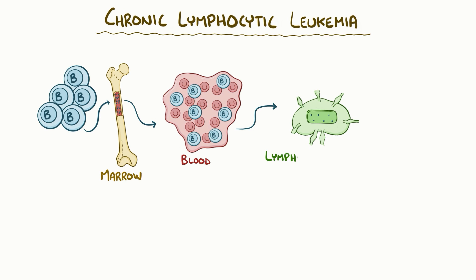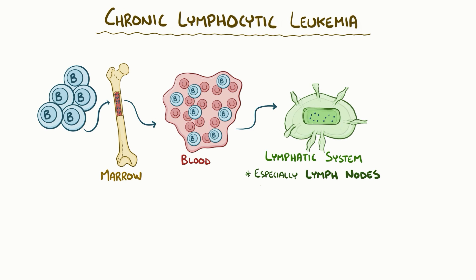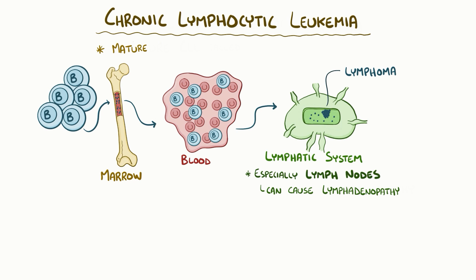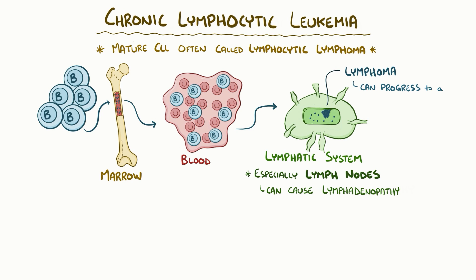Some of these cells then move to the lymphatic system, and although this does include the spleen, the lymph nodes are typically prioritized. This causes swelling of the lymph nodes, or lymphadenopathy. Eventually, B cells in these nodes will accumulate into distinct masses, or lymphomas, which is why mature CLL is sometimes called small lymphocytic lymphoma. Further progression might take the form of a Richter transformation, where those small, pretty harmless lymphomas collect into sizable masses that damage the body.